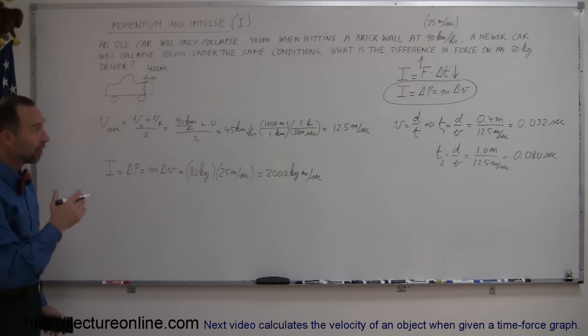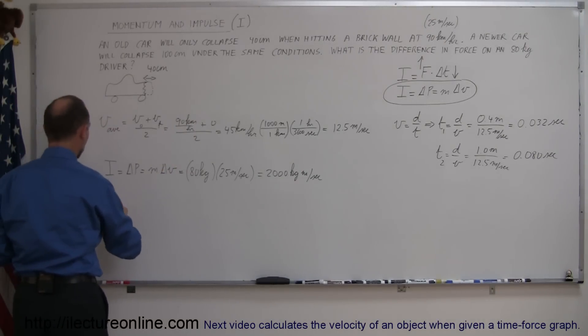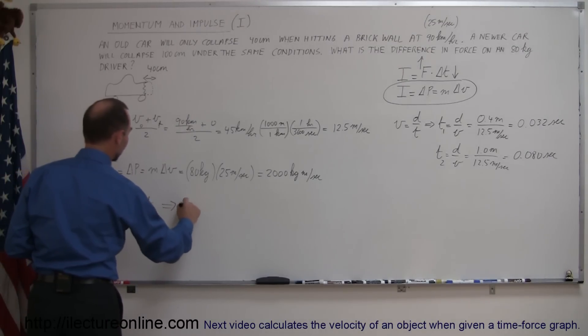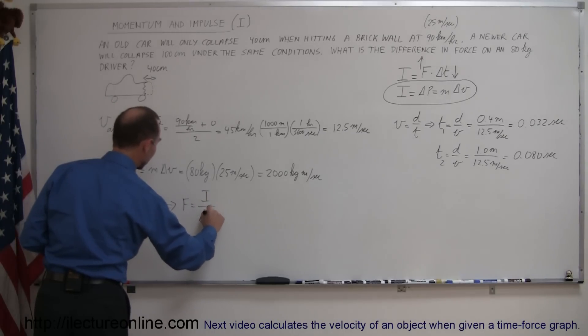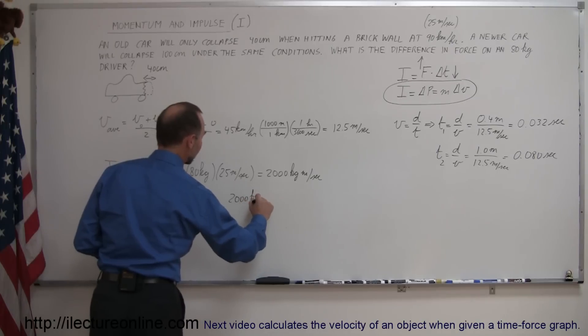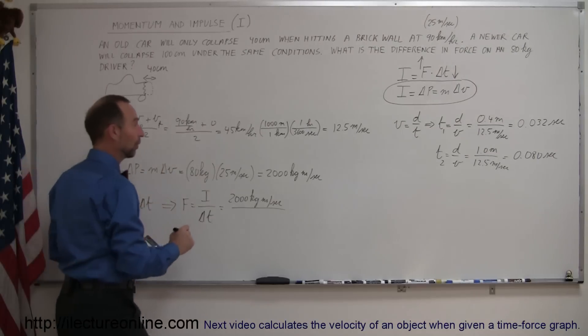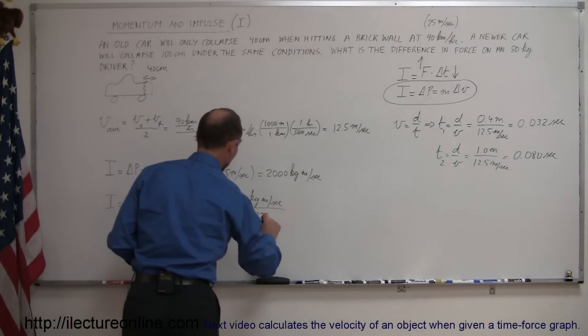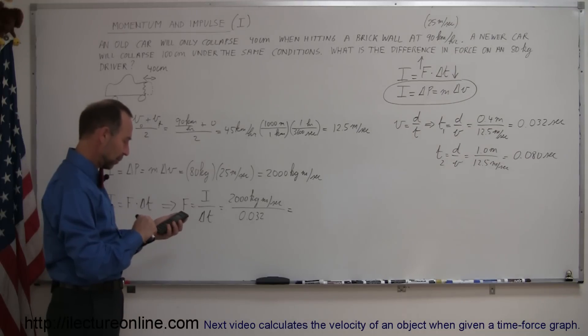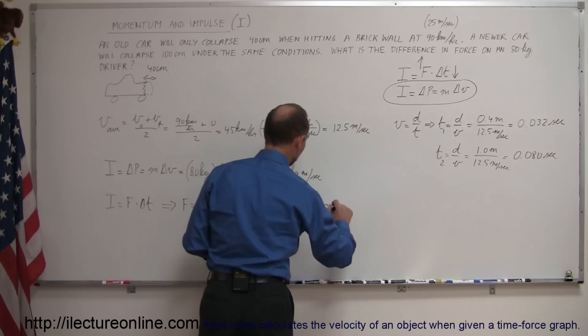If we now want to figure out how much force is involved in this collision, the force on the driver slowing them down, we use the other equation. Impulse is equal to force times the change in time. So we can solve this equation for force. The force is equal to the impulse divided by the amount of time that the collision took. Impulse being 2,000 kilograms meters per second, and the time, let's do it for the first car, 0.032 seconds. That would be 2,000 divided by 0.032, which equals 62,500 newtons of force.